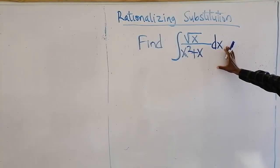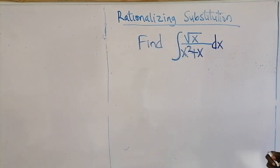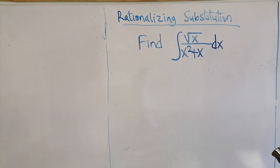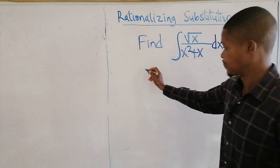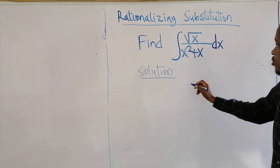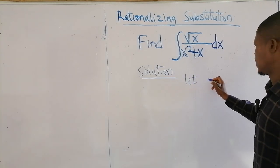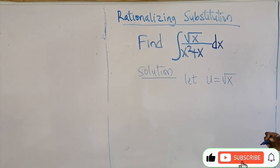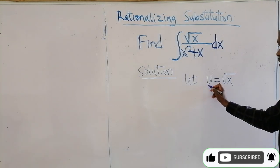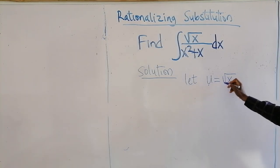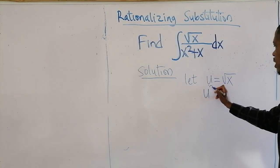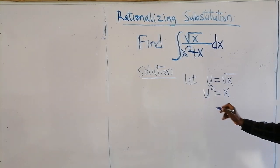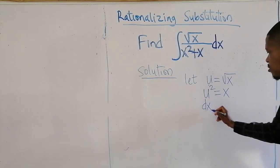The second question on this aspect is: find the integral of this function. We are going to substitute for the radical. Let u equal the square root expression. Square both sides so the radical disappears: u squared equals the expression inside. Then differentiate x with respect to u to get dx/du equal to 2u, so dx equals 2u du.